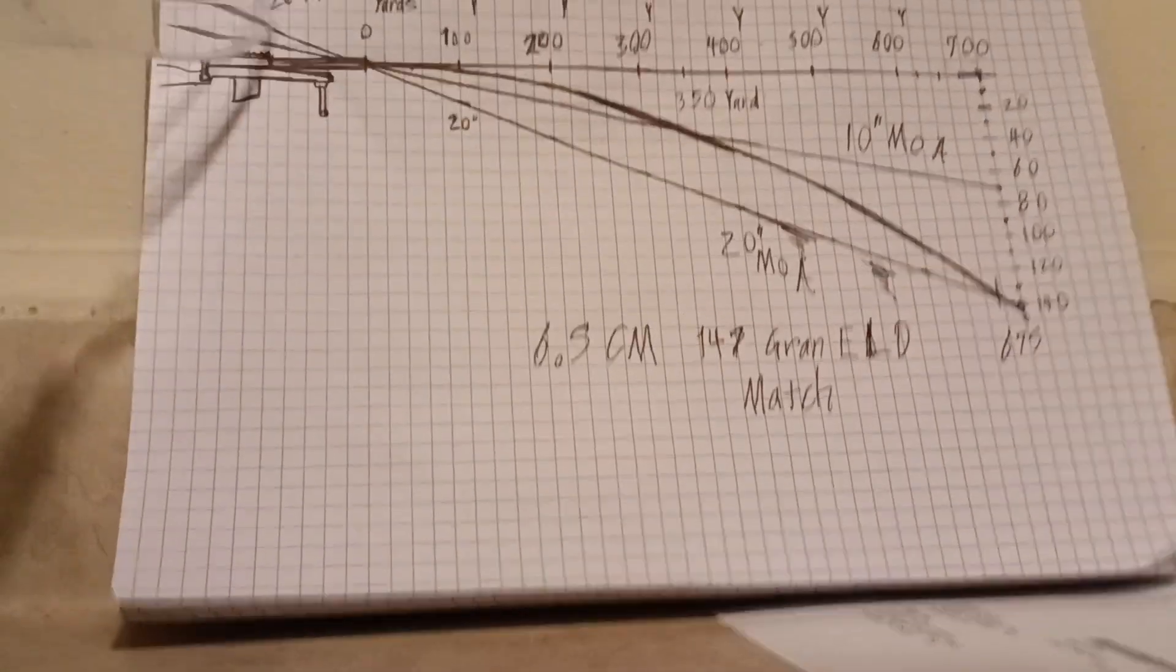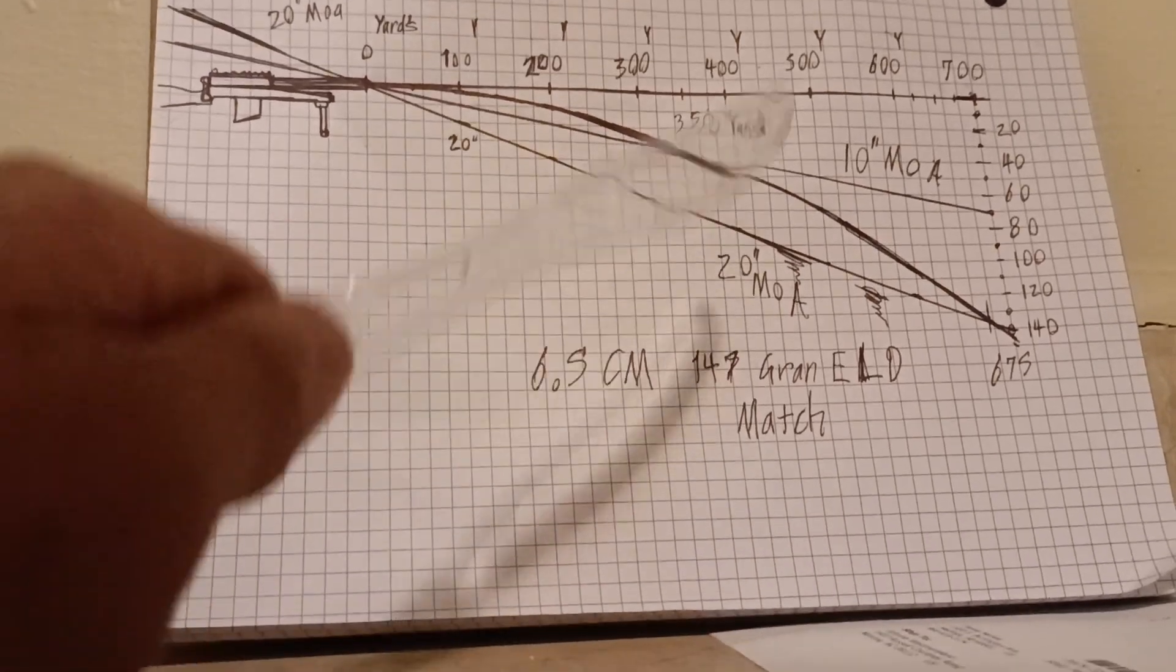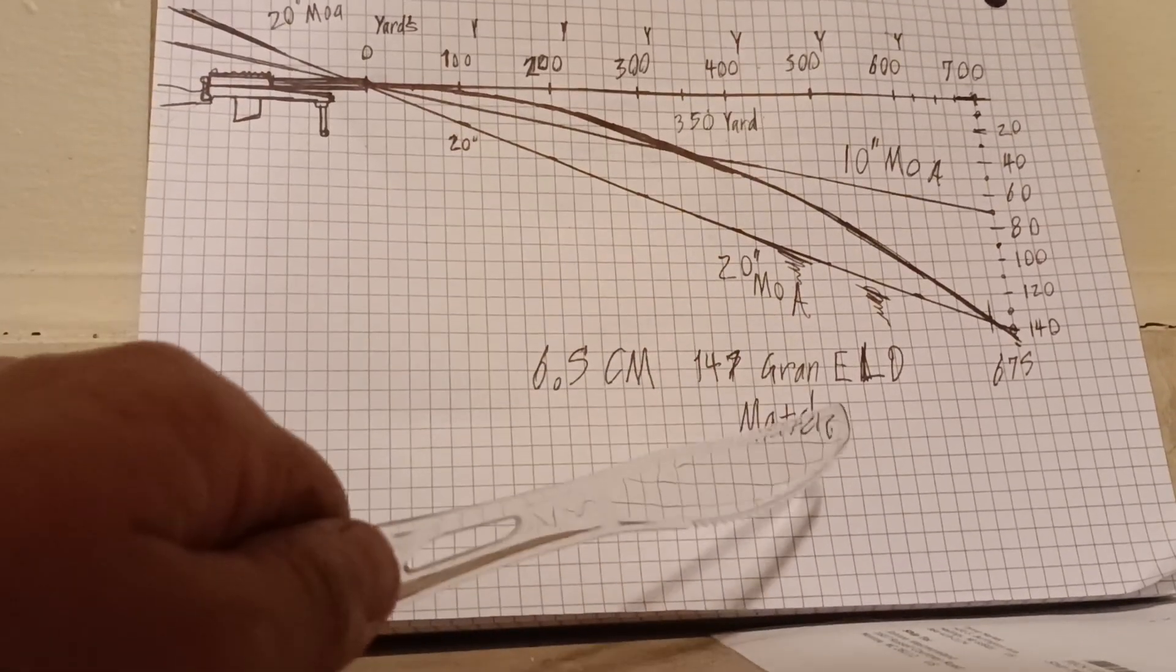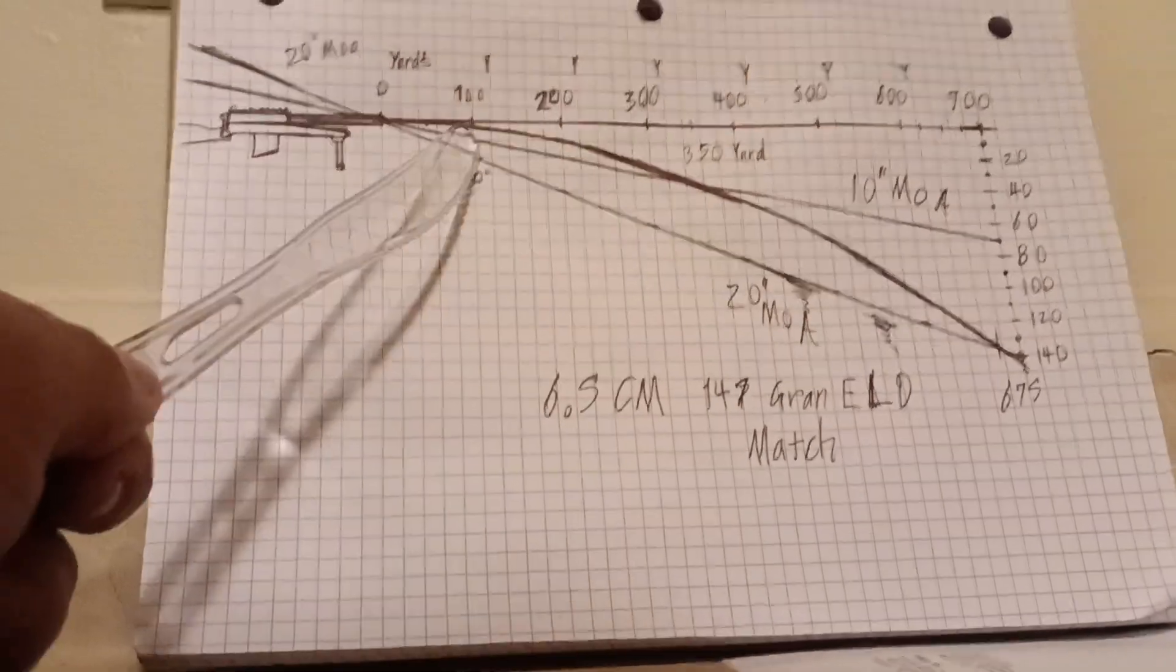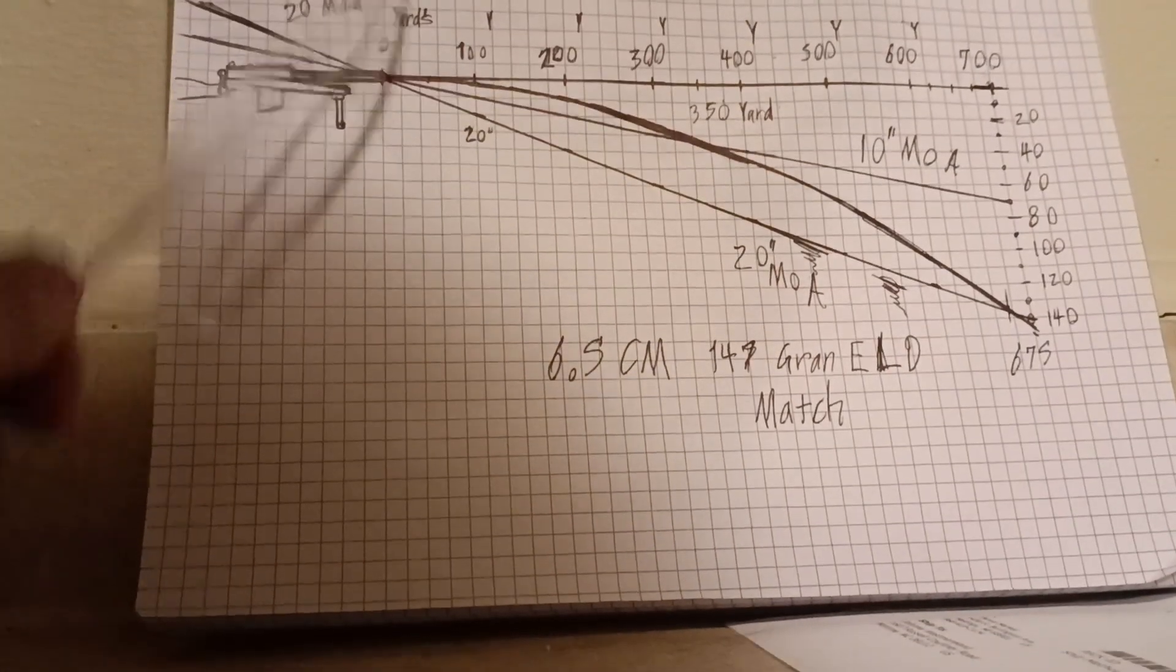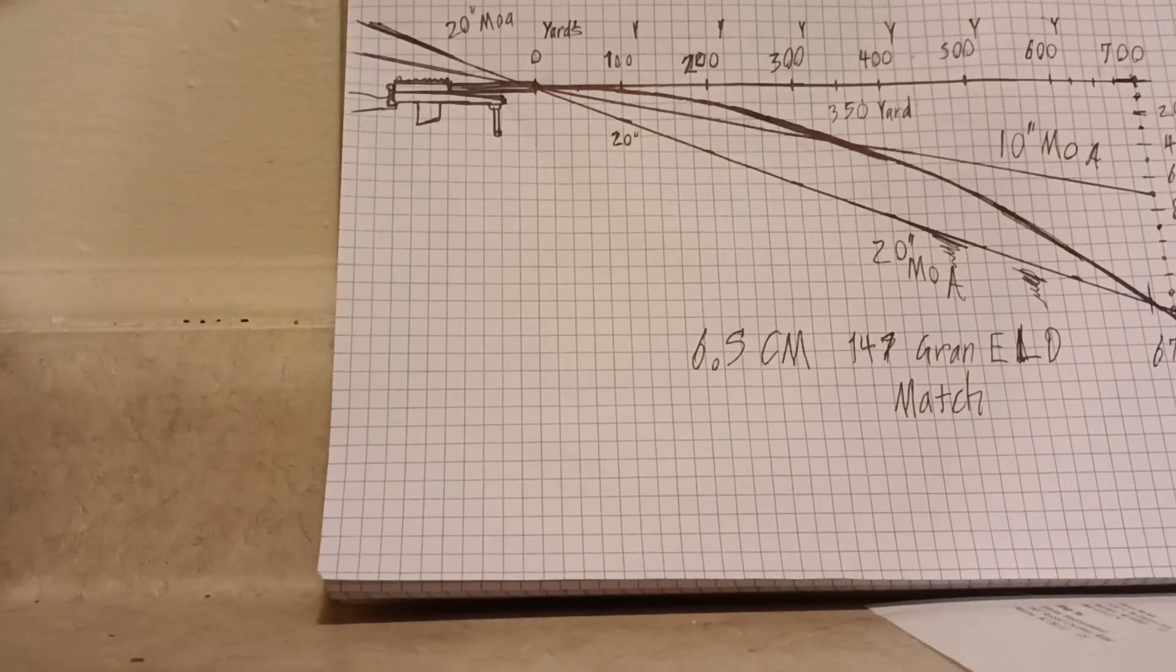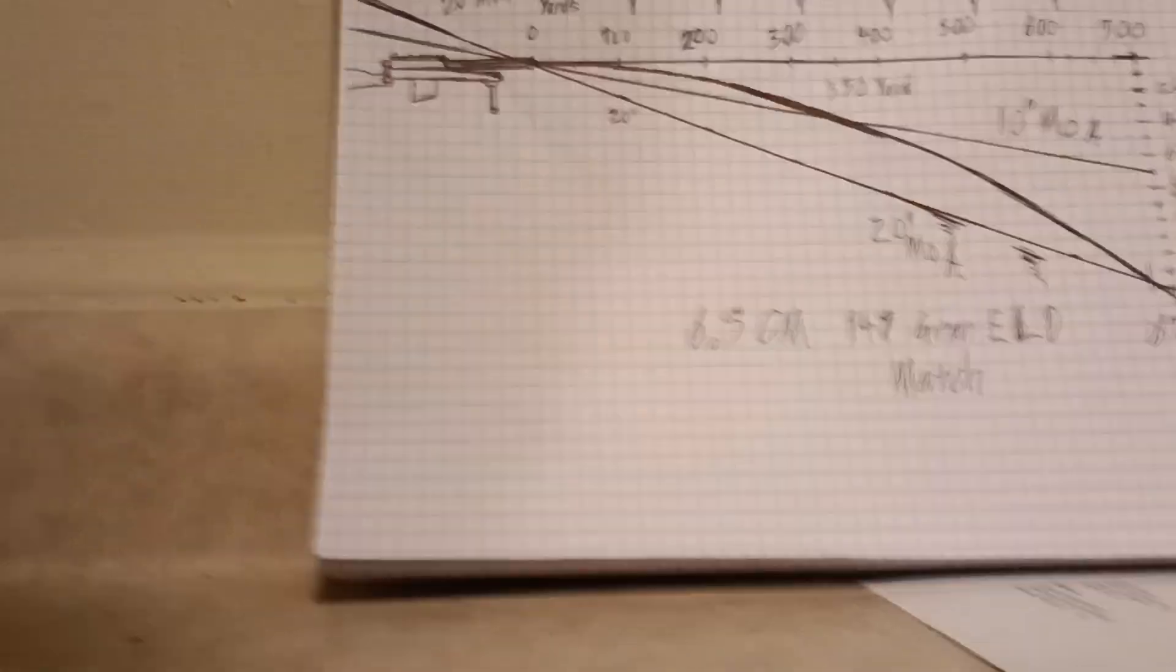The second line on this chart is your 6.5 Creedmoor 147 grain ELD Match trajectory. To dial this in on your ballistic calculator, you want to see the exact trajectory of where the bullet's going to fly without any variables.